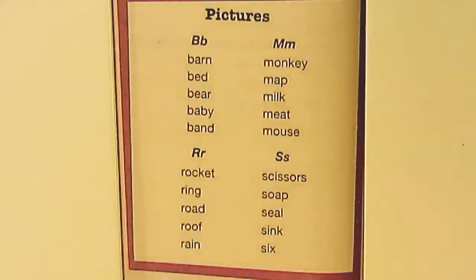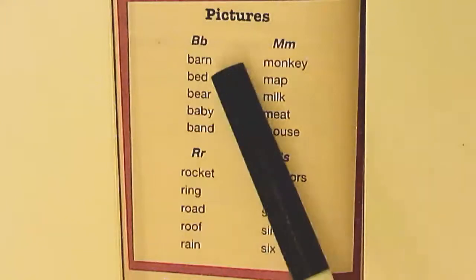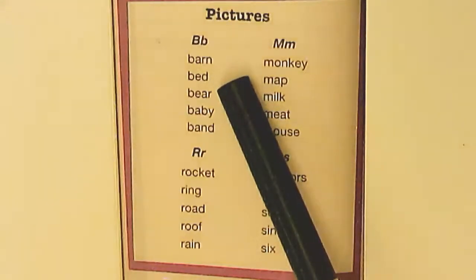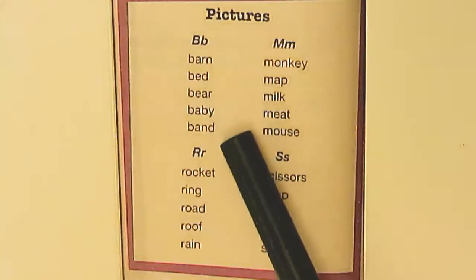So these are the words that we have in our book. For B, we have barn, bed, bear, baby, and band.